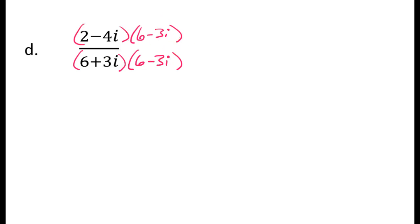So we will have to do the distributive property. Some teachers say FOIL, but I just think of it as doing the distributive property twice. But anyway, we have to multiply a binomial times a binomial. So in the numerator, 2 times 6, that's going to be 12.